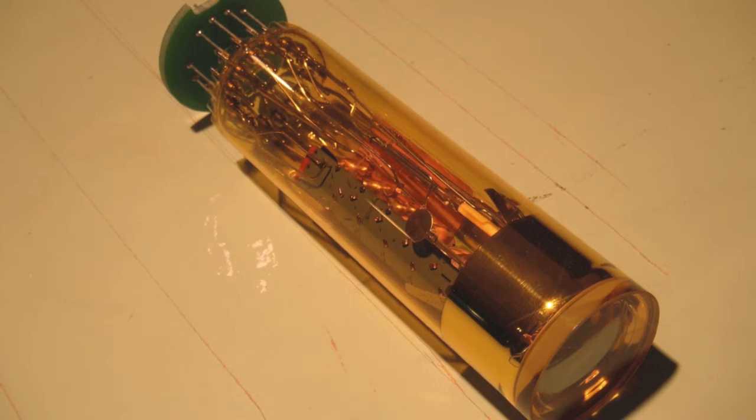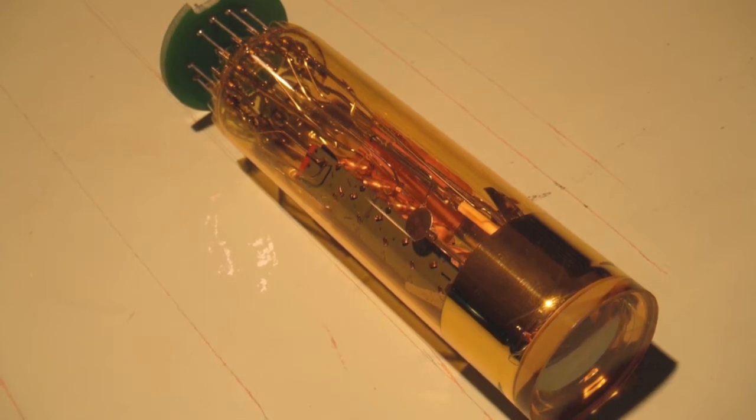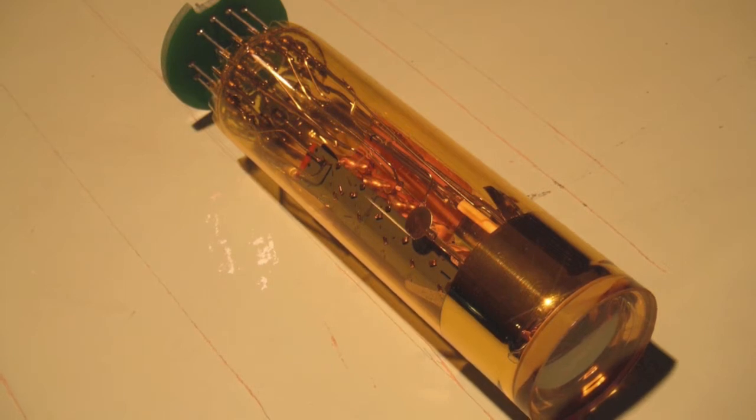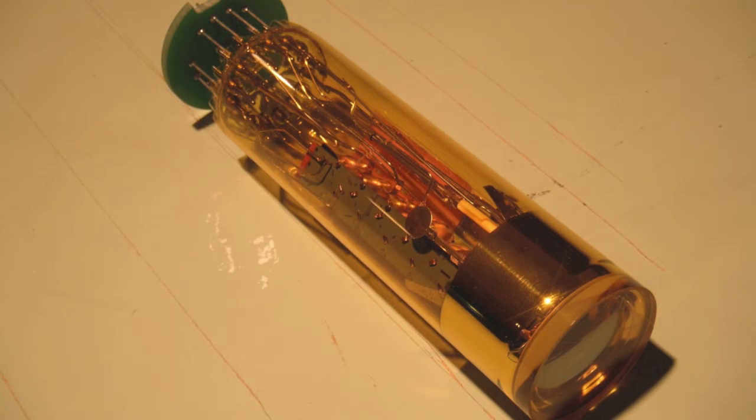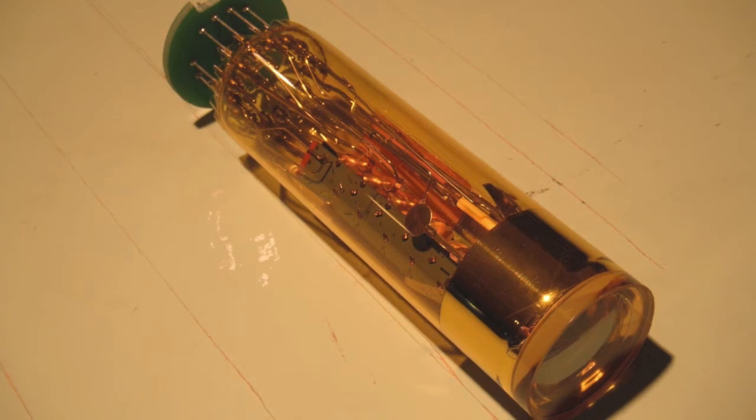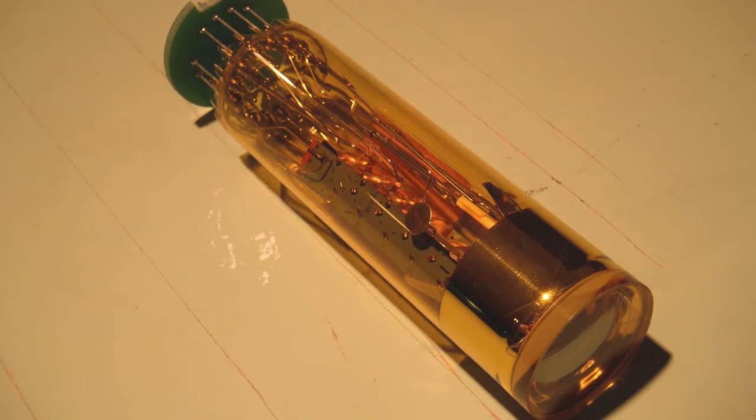But in all seriousness, the photomultiplier tube gives us a way to actually get electric data coming out, whereas your eyes, you have to count it and write it on a piece of paper. This is going to give me a way to do it electrically as well as save time by not having to spend hours and hours looking into a piece of plastic in the dark, which is not fun.